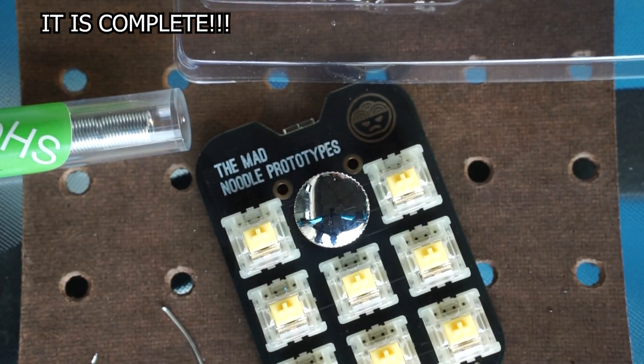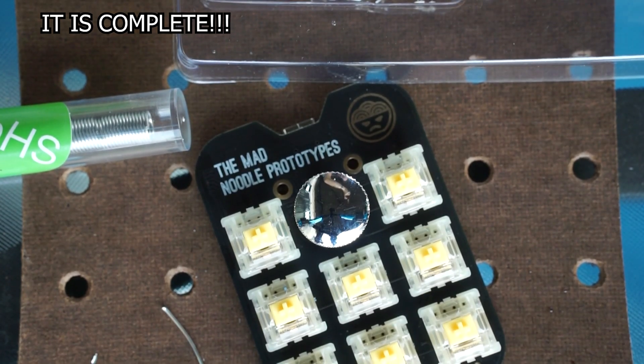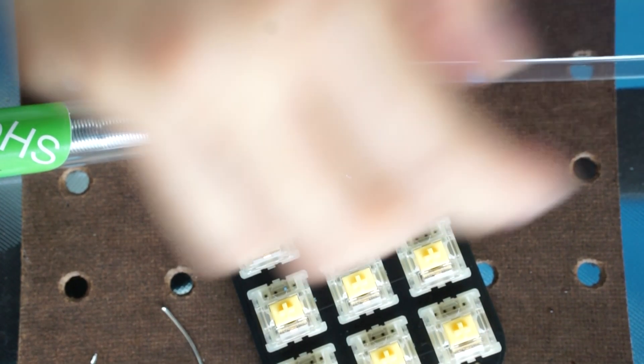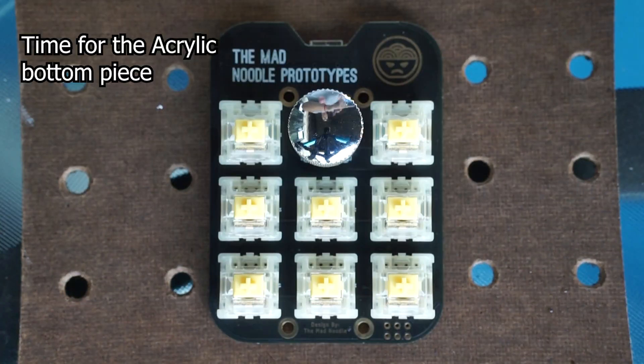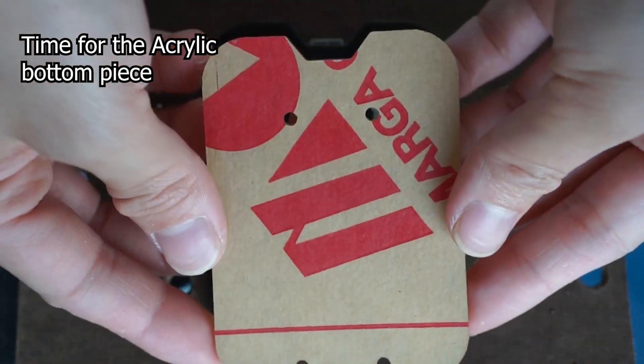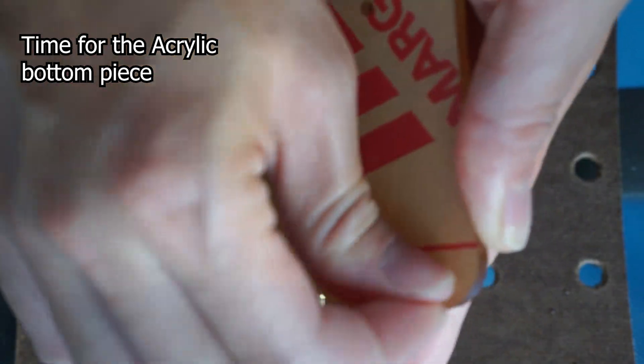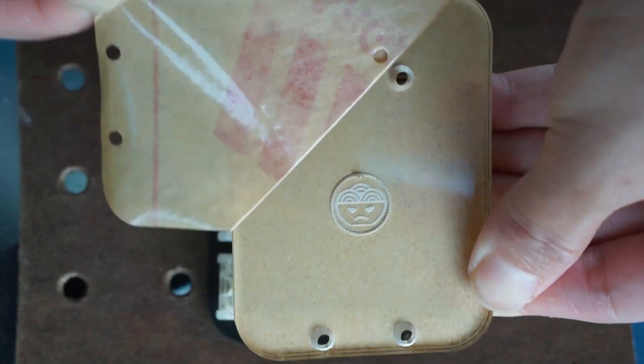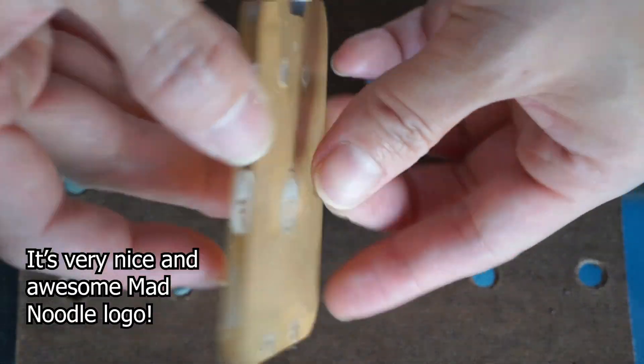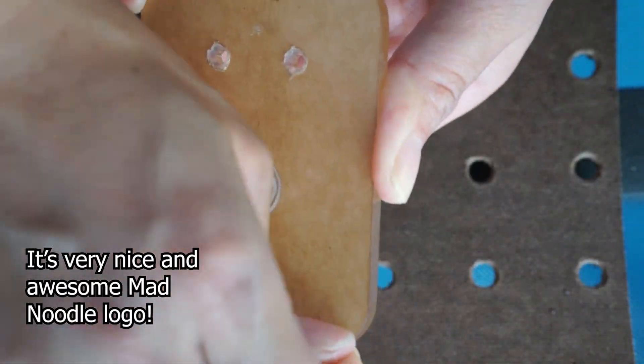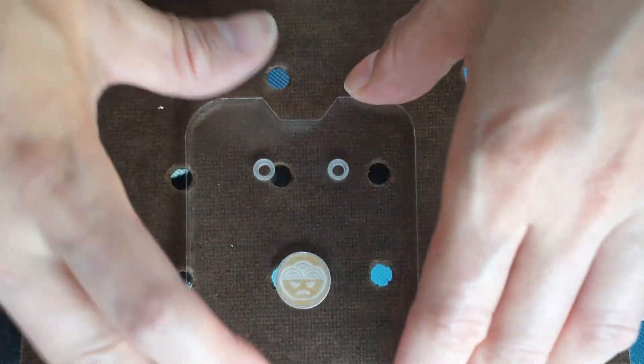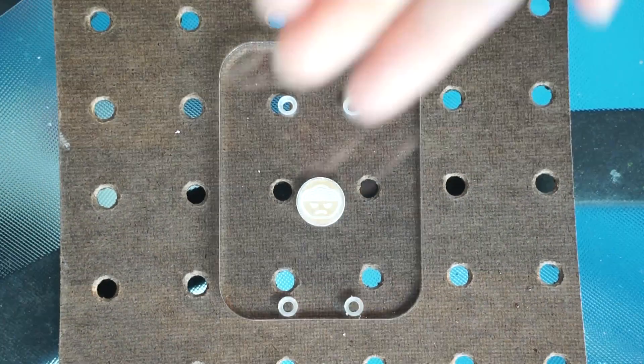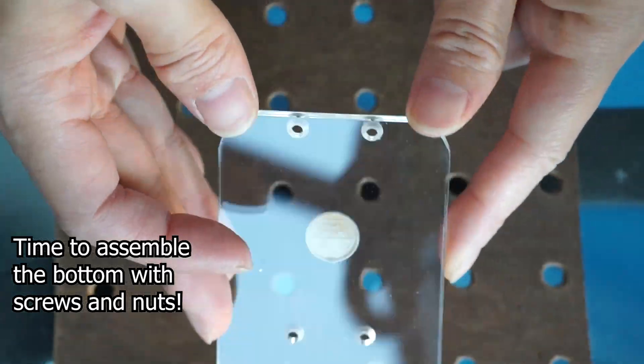So now we have our beautiful MacroPad with the switches on here and we are going to put the keycaps on. All right. First off, we need the acrylic bottom. So again, this is a very high quality one, allows the RGB to shine through. And you can also program the RGB, by the way. But you have to use the program that is stated on the Mad Noodle website.